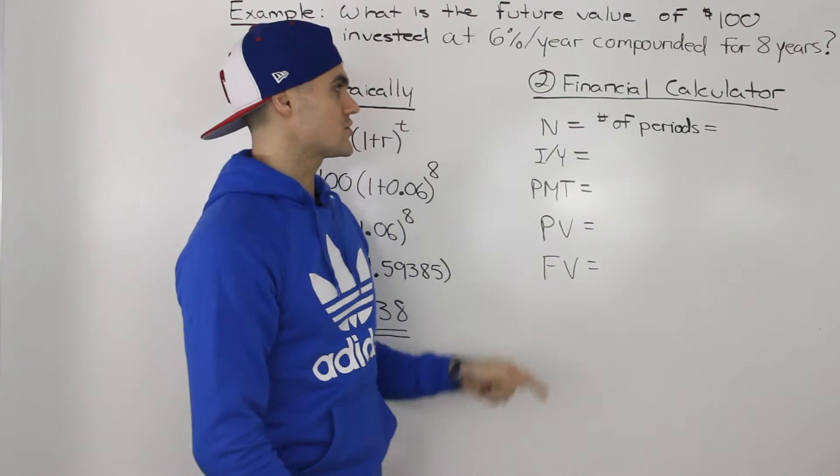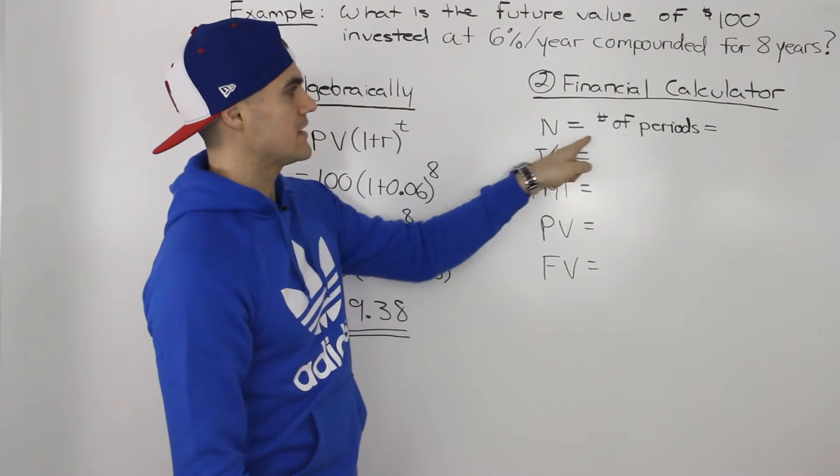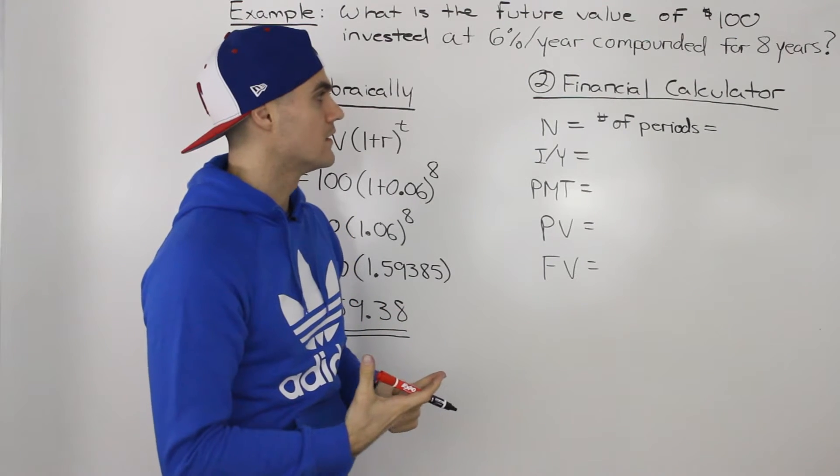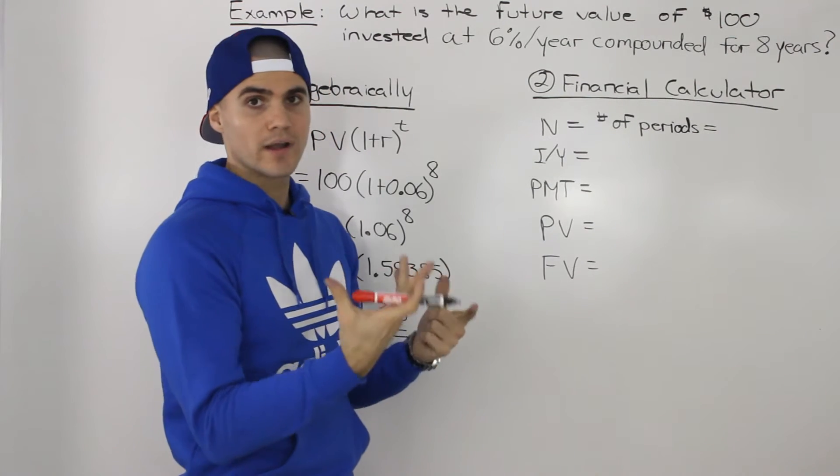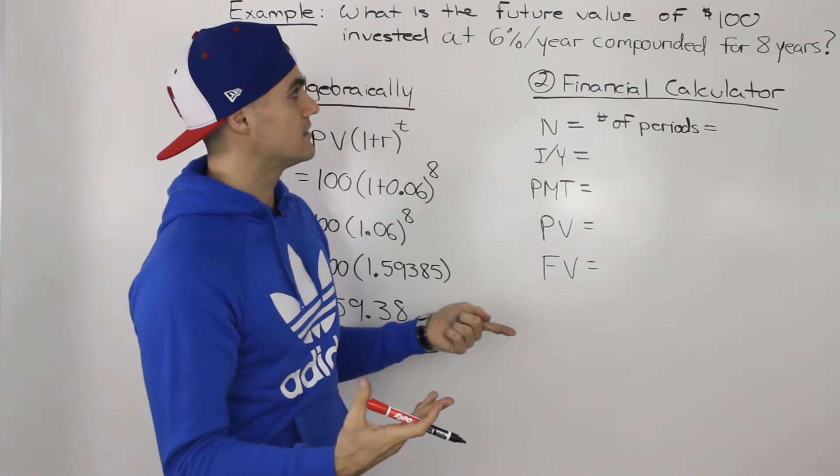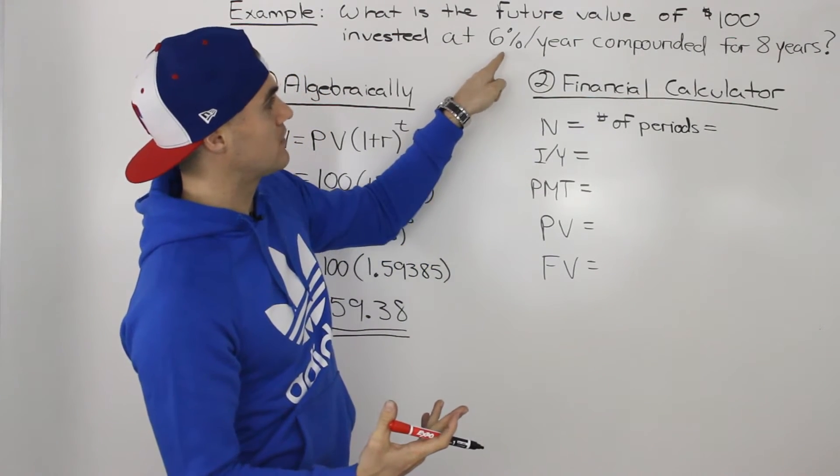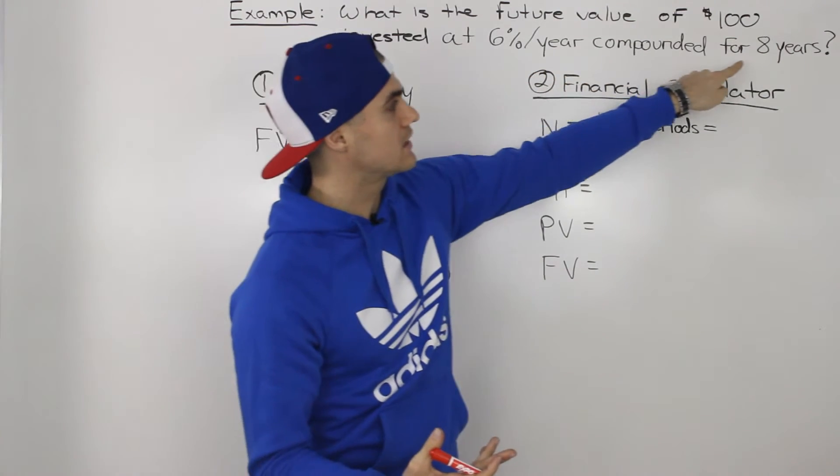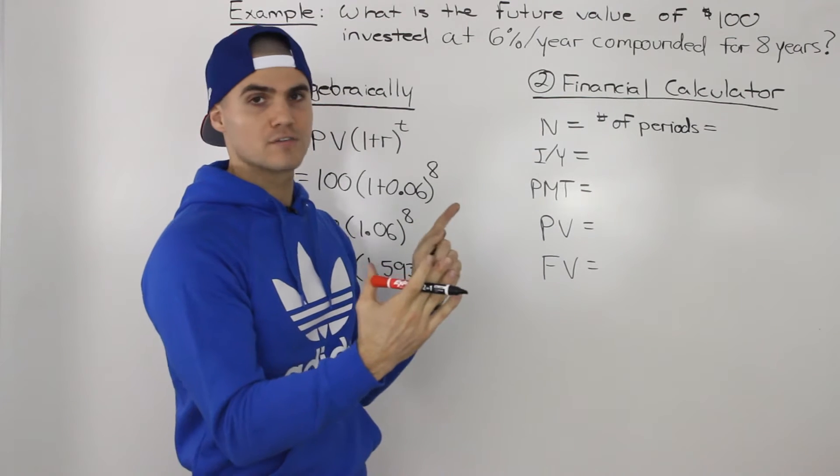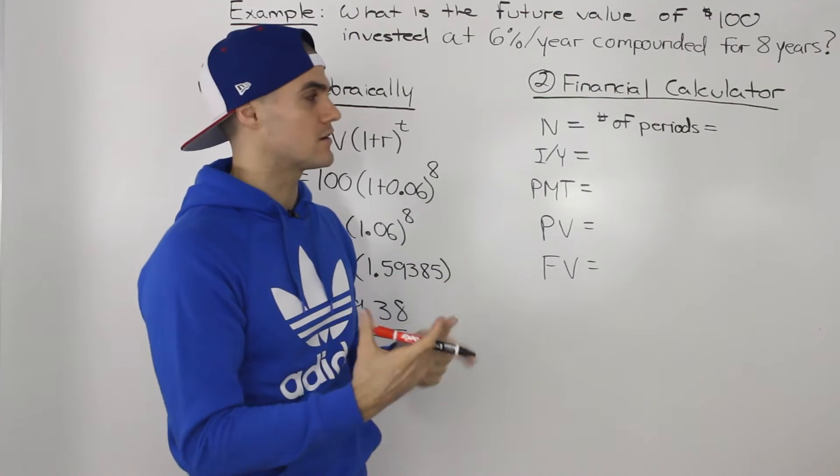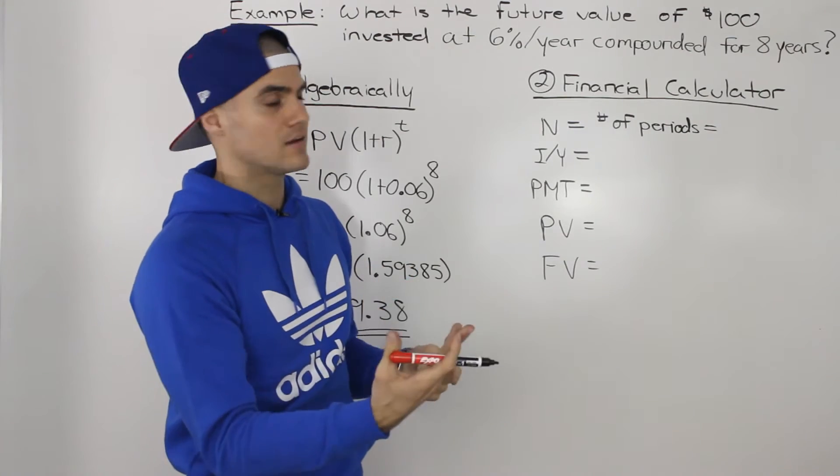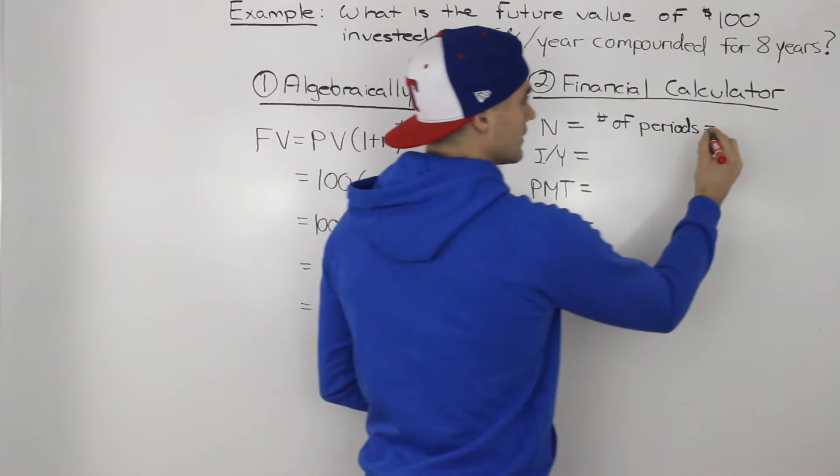Now, the first variable, the N, basically represents the number of periods that we're dealing with in this scenario. So the first thing you have to know is what is one period? Is it half a year, a quarter year, is it a year? And in this case, because we're dealing with interest per year, and they're asking us for 8 years, we can be pretty confident that the period of time we're dealing with is years. So we're trying to find the future value of something after 8 years, so we know that our N is going to be 8.